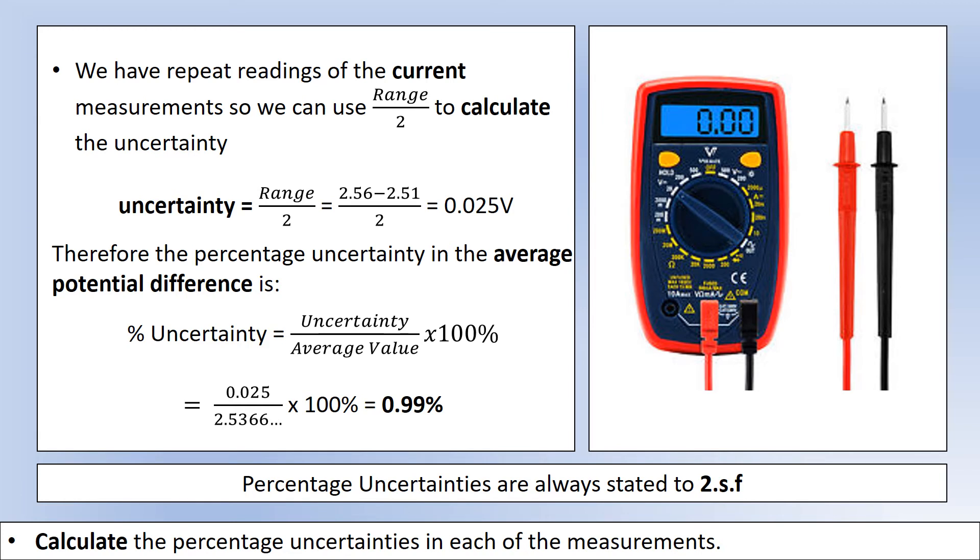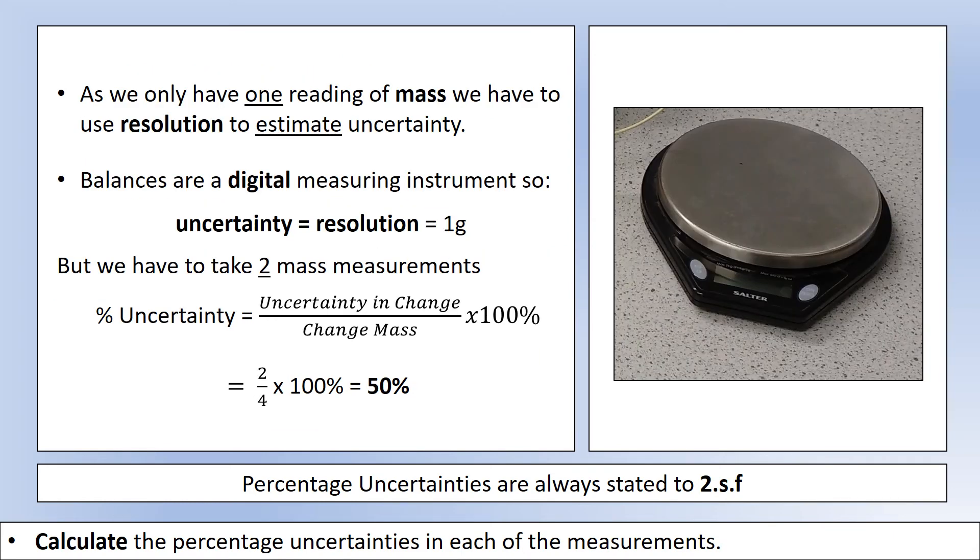And then finally, looking at the mass measurement, this is going to be the key one. Our balance has an uncertainty of 1 gram, but because we're doing a mass change, we used that measurement twice. So our uncertainty isn't just the resolution, it's twice the resolution, because we had to take one mass and subtract from it another measured mass. So our uncertainty in the mass change is 2 grams. Our mass change, or the mass of stearic acid, was 4 grams. So that gives us a percentage uncertainty of 50% in our mass measurement, which is very high and is considerably bigger than anything else. This would be our main source of uncertainty.